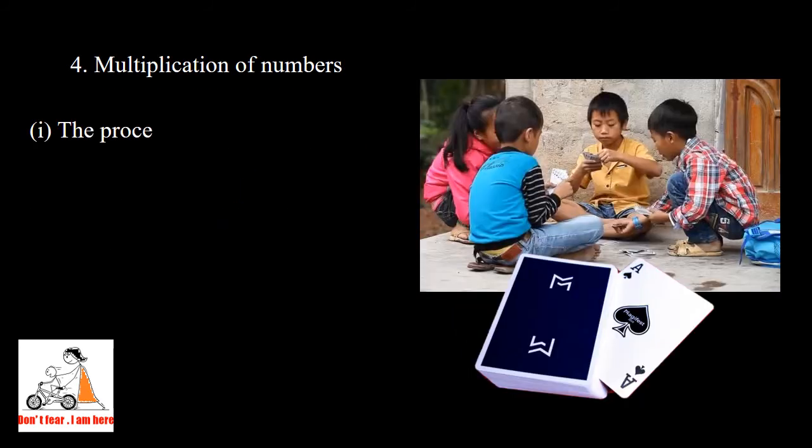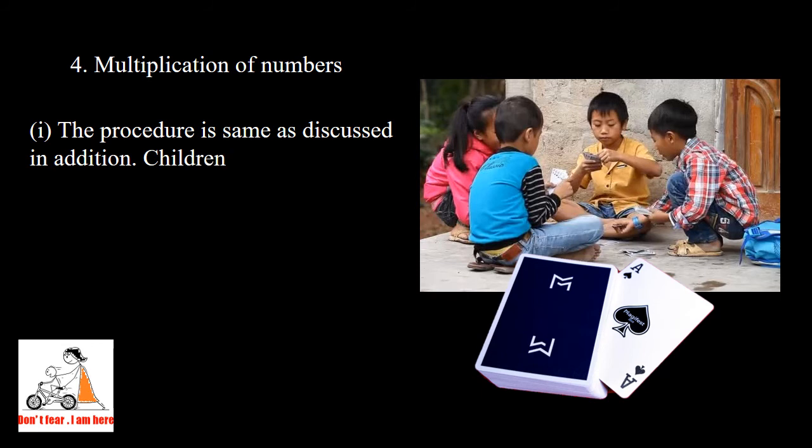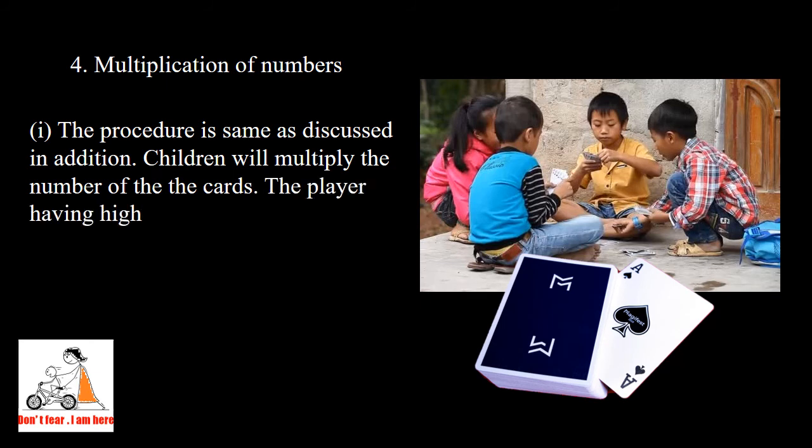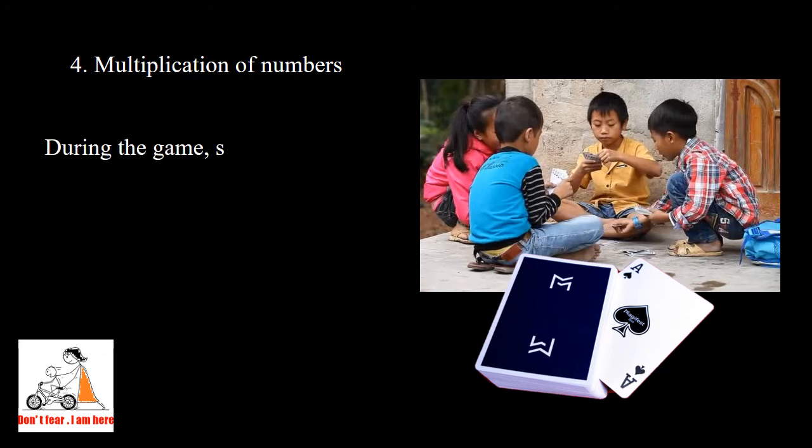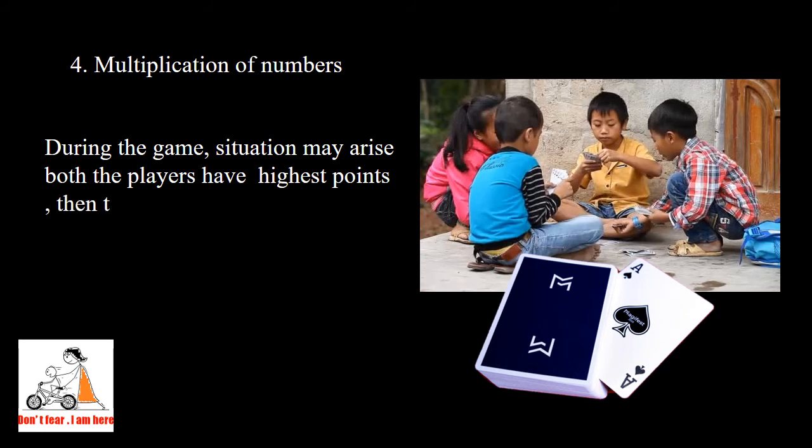Next game is multiplication of numbers. The procedure is same as discussed in addition. Children will be distributed cards and they will multiply the numbers of the cards. The player having the highest product will take all the cards distributed in that turn. During the game, if both players have the same highest points, then the players will share the cards among themselves.